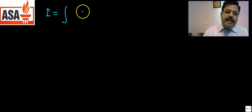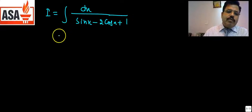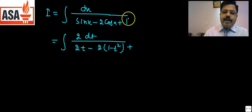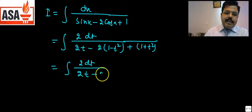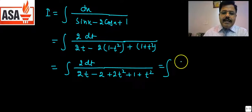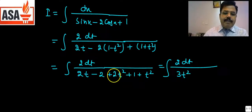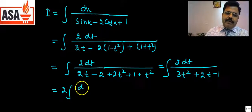The next question: ∫ dx/(sinx - 2cosx + 1). You can directly substitute: sin x → 2t, cos x → (1 - t²), and the constant 1 multiply by (1 + t²). The denominator becomes: 2t - 2(1 - t²) + (1 + t²) = 2t - 2 + 2t² + 1 + t² = 3t² + 2t - 1. The numerator is 2dt. Now complete the square for 3t² + 2t - 1.